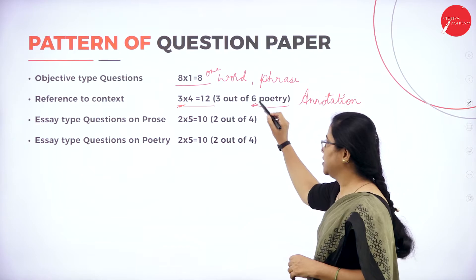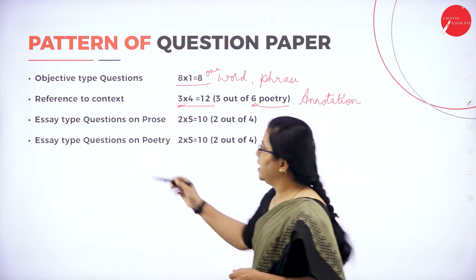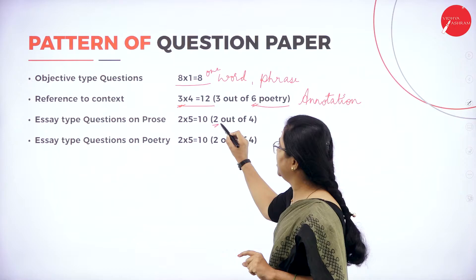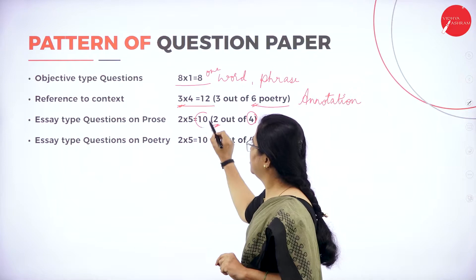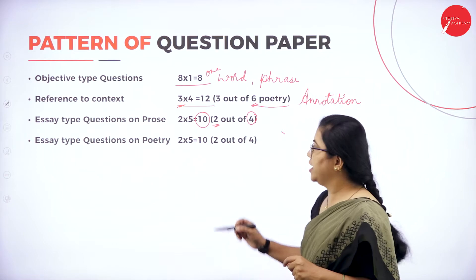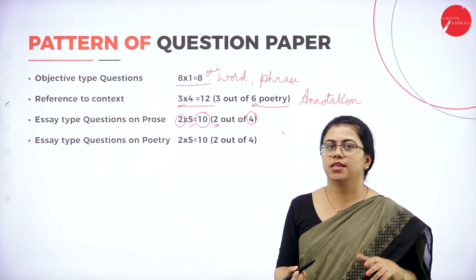Then essay type questions on prose — it's a long answer type. You will have to answer any 2 out of the 4 given questions; choice is less. That is for 10 marks, with each question worth 5 marks. You have to read all of them.